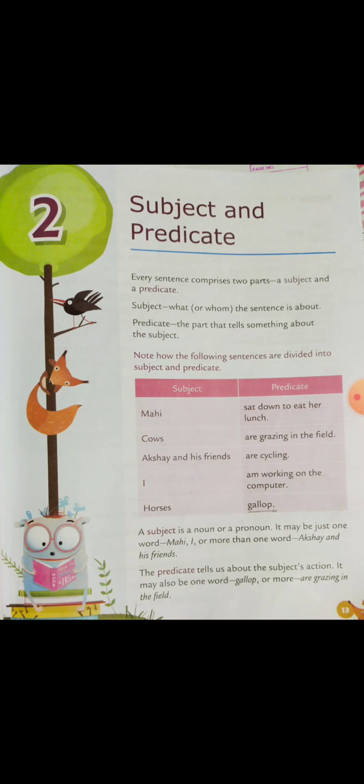Every sentence comprises two parts: one is the subject and the other one is the predicate. The subject is what or whom the sentence is about, and the predicate is the part that tells something about the subject. For example, in 'The boys are running,' the subject is 'the boys' and the predicate is 'are running.'